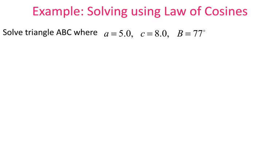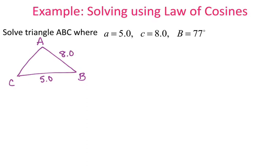Let's solve triangle ABC where A is 5.0, C is 8.0, and angle B is 77 degrees. I'll start by sketching the triangle. Side A is opposite angle A, so 5.0 is on one side; side C is opposite angle C, so 8.0 is on the other side; and angle B is 77 degrees, which is the angle in between the two sides. So this is a side-angle-side triangle — and since the only angle we have is 77 degrees and we don't know its corresponding side, we'll use law of cosines.